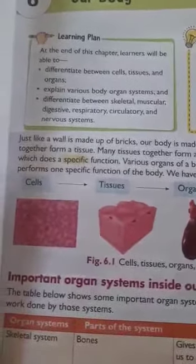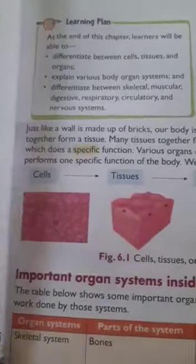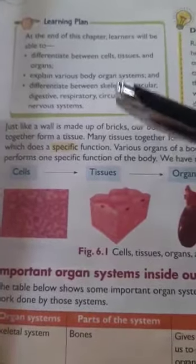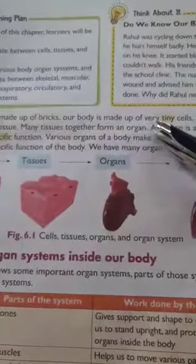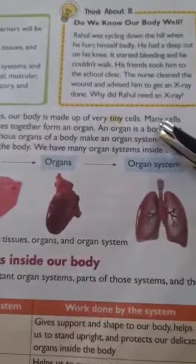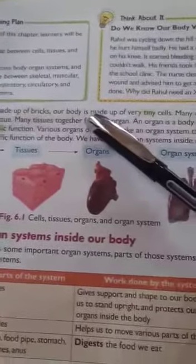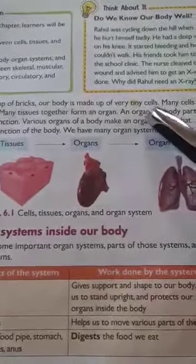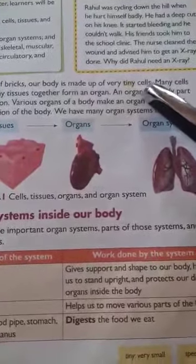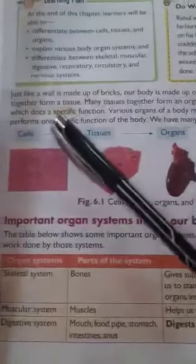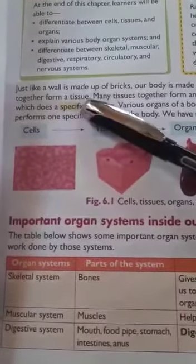Just like a wall is made up of bricks, in the same way our body is made up of very tiny cells. So cells are the building blocks — they are the bricks of our body. Many cells together form a tissue.